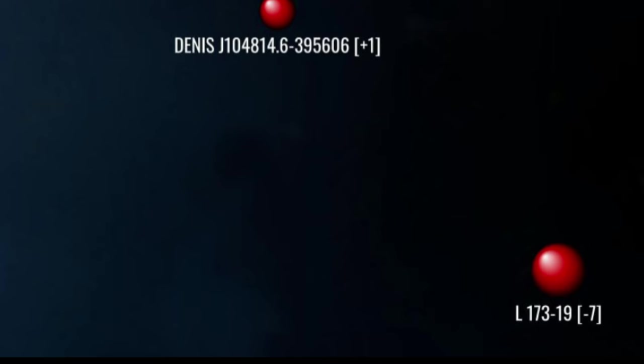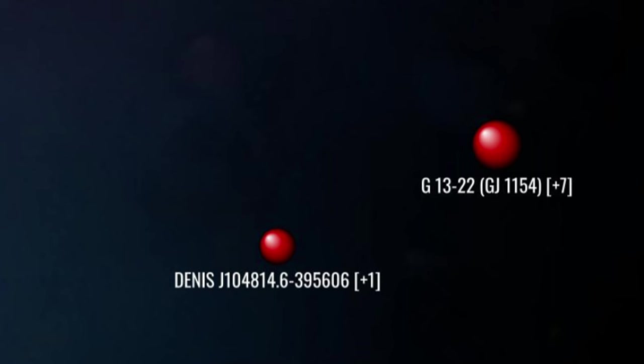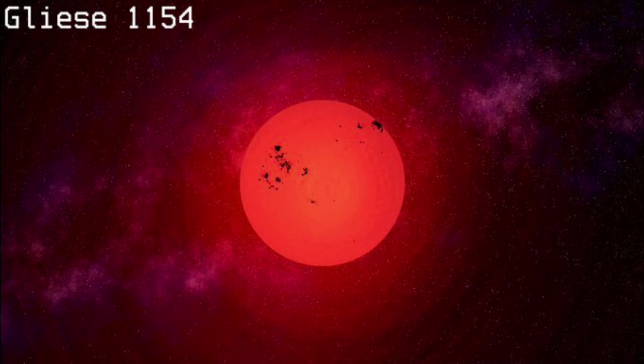West and 14 parsecs north, we arrive at Gliese 1154, a red dwarf slightly smaller than Proxima Centauri. A study in 2010 suggested that Gliese 1154 had a remarkably fast rotation period at just 1.7 days, compared to 90 for Proxima.